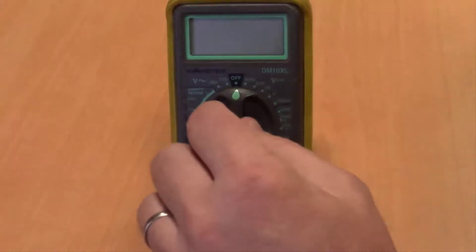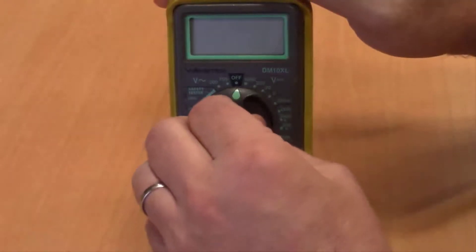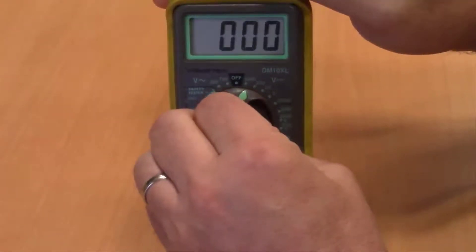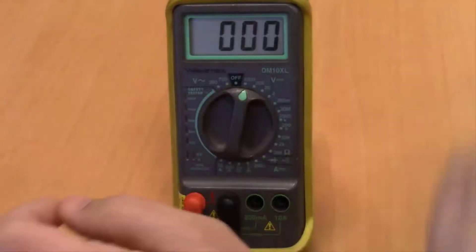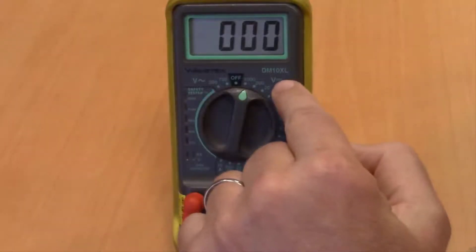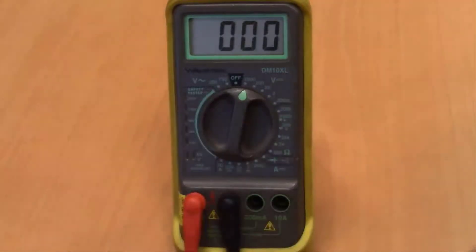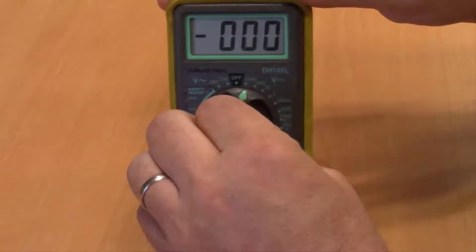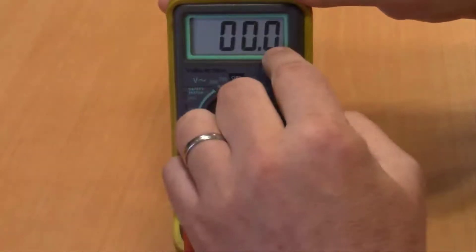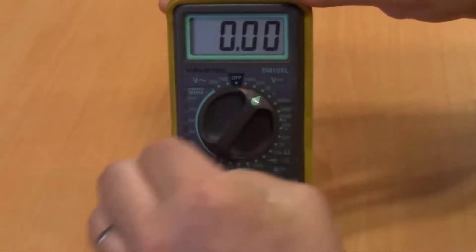So you've got the offset setting on the dial. Then you have your voltage here for DC. You can see the DC symbol there and depending on which range you select you can see the decimal point here move places.